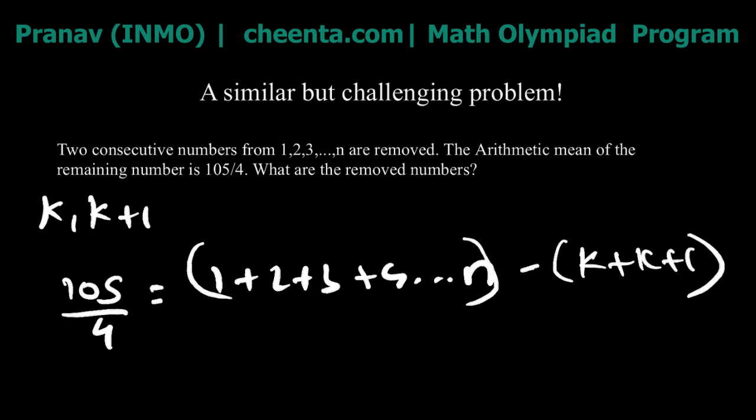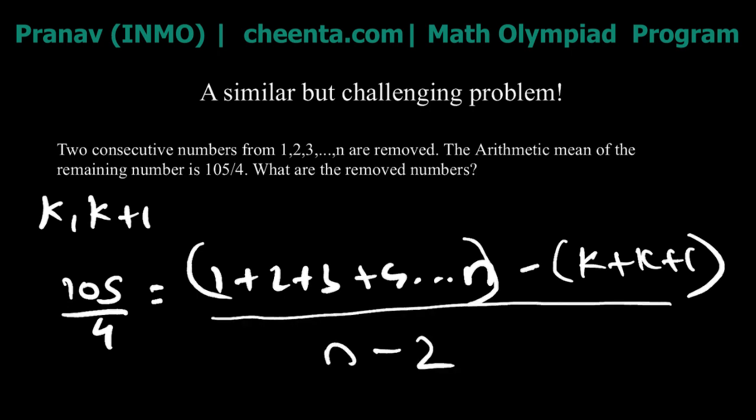Why n − 2? Because you are removing two numbers from the n numbers 1, 2, 3, … n, leaving n − 2 terms. That is the approach you would take. One more hint: the sum 1 + 2 + 3 + … + n is written as sigma(n) and equals n(n + 1) / 2.